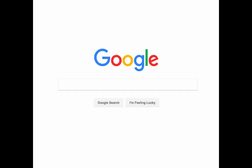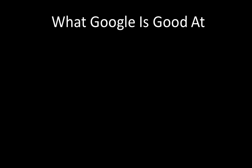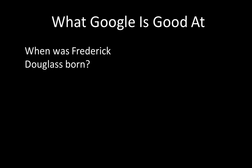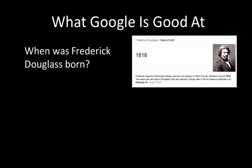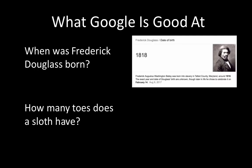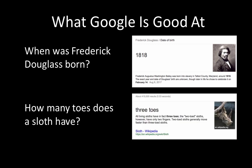While Google is a good resource for some questions, there are other questions for which it will not provide adequate sources of information. The types of questions that Google is useful in answering are quick factual questions — for example, 'When was Frederick Douglass born?' or 'How many toes does a sloth have?' Questions like these can usually be answered very quickly with Google.